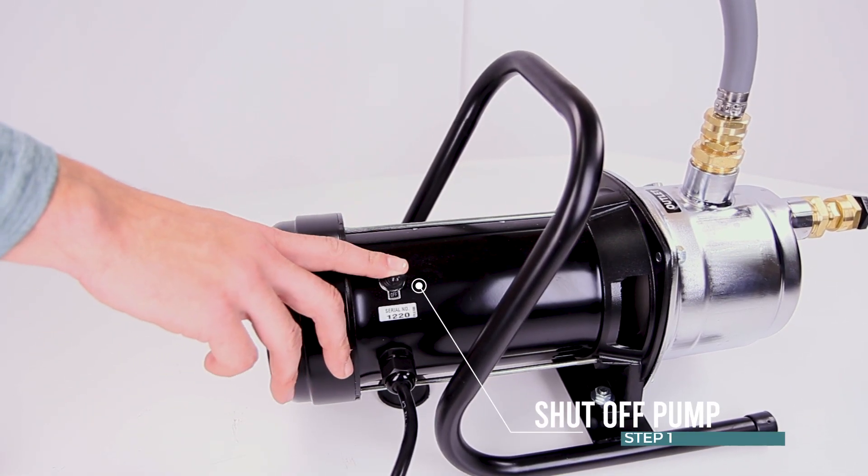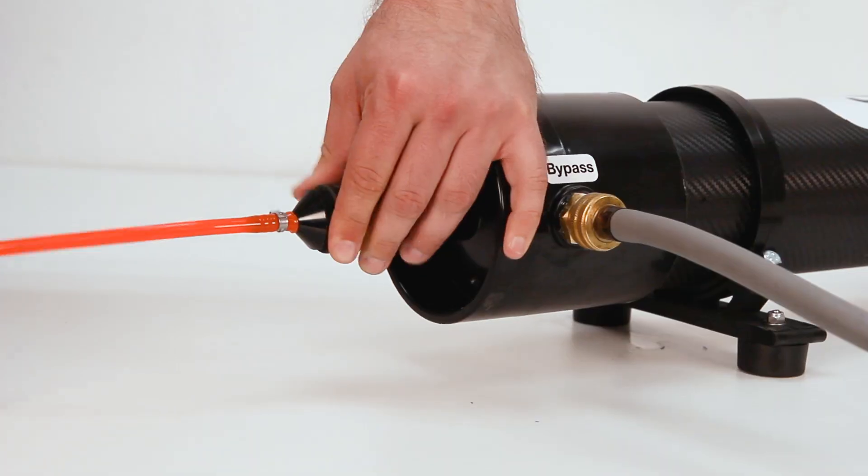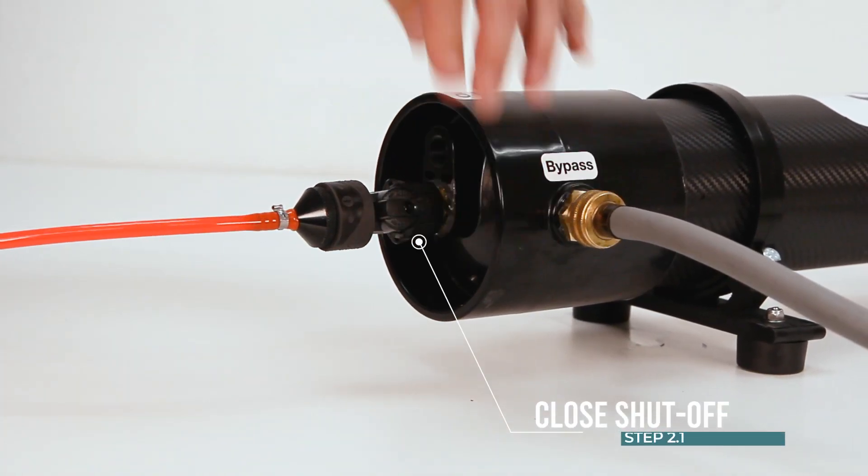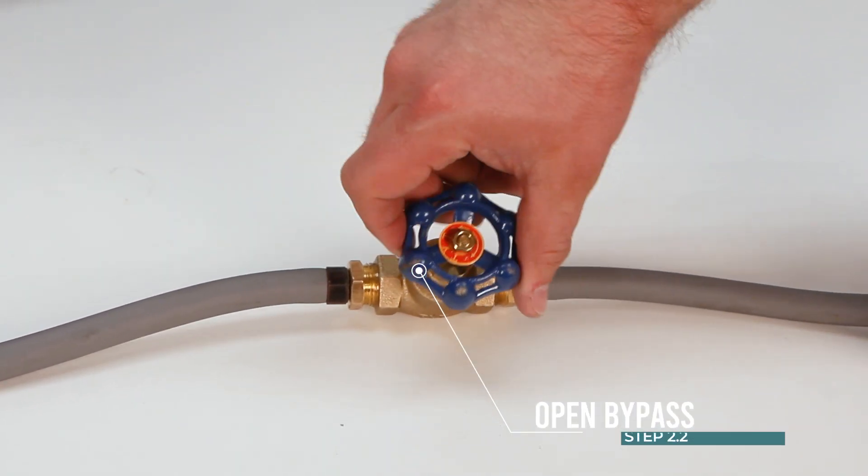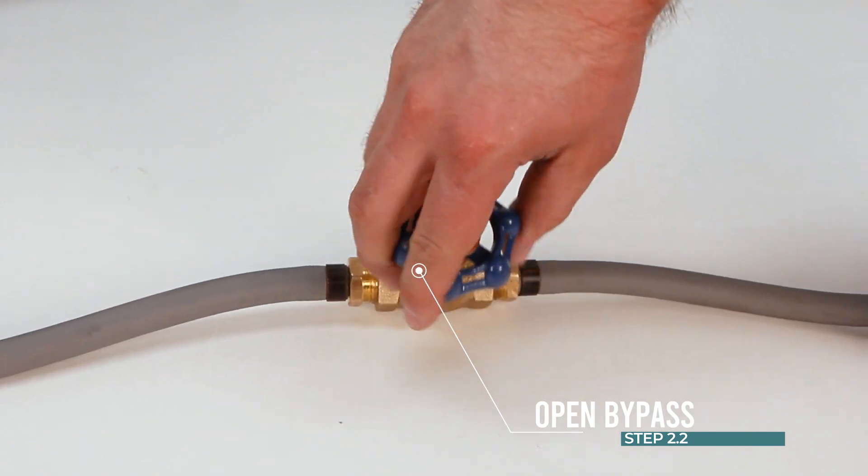Shutdown procedure: If using a pump, shut off the pump before turning off supply water. Close the shut off valve to the pole. Open bypass valve to fully open position and flush out the system for three to five minutes. Turn supply water off and disconnect the water line.